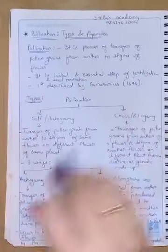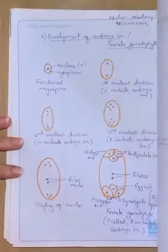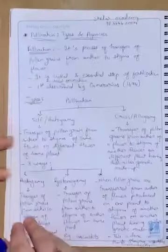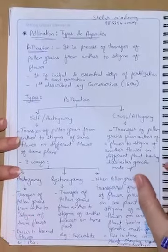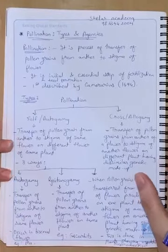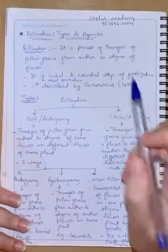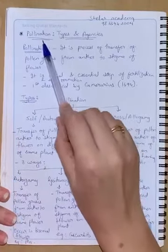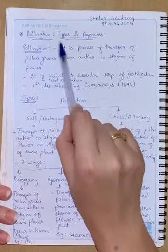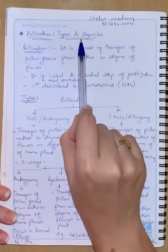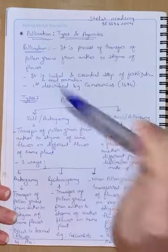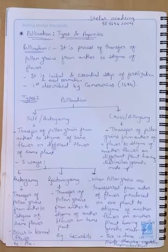Last lecture we studied all the structures of the flower — the male structure and the female structure in detail. Now we are going to study in this lecture pollination: the types and the agencies of pollination.